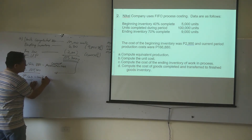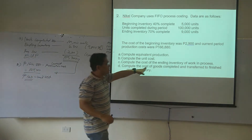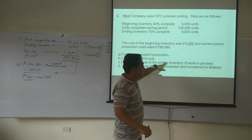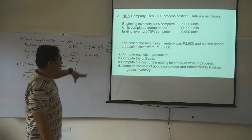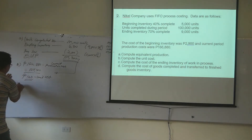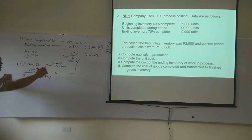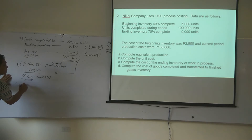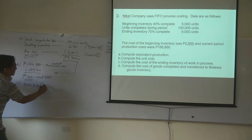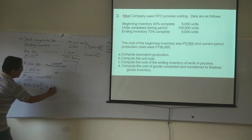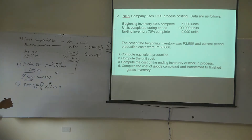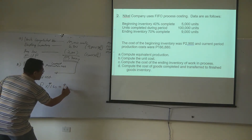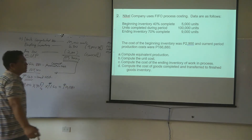Next question is to compute the cost of the ending inventory of work in process under FIFO. Ending inventory is 9,000 units at 70% complete, so 9,000 times 70% times $1.60 unit cost. Our answer for ending work-in-process inventory cost is $10,080.